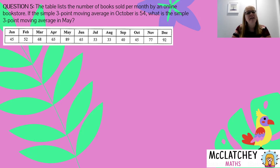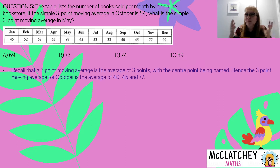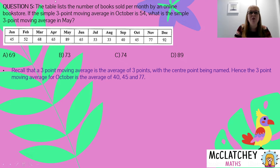Question five. The table lists the number of books sold per month by an online bookstore. If the simple three-point moving average in October is 54, what is the simple three-point moving average in May? We have four choices. The first thing to note is we've been given information about October. Let's remember what a three-point moving average is — it's the average of three points, and the centre is the one named. So the three-point moving average in October has October as the centre point. To find it, we'd simply add the values for September, October, and November — 40, 45, and 77 — together and divide by three.